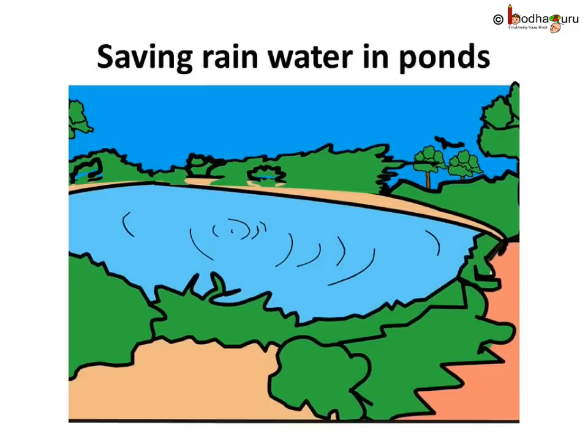When more people are involved and work together, more rain water can be saved. In many places of India, people are now saving rain water by digging ponds and lakes. People also make big dams to store rain water.